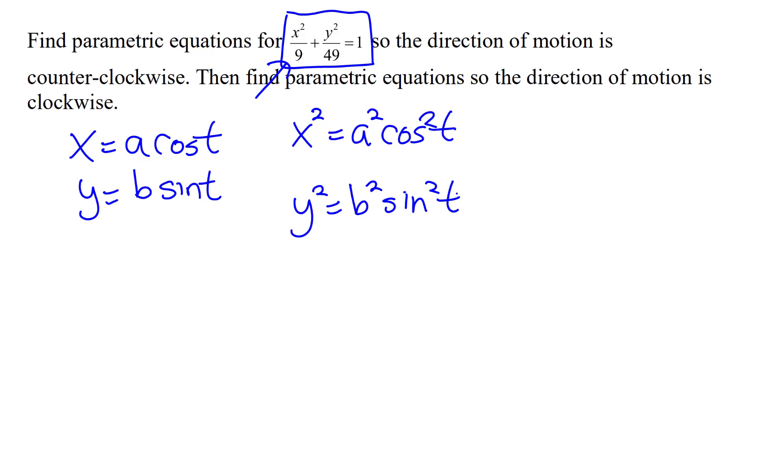It still doesn't look like that form, so I'm going to divide by a squared and divide by b squared. So now I have x squared over a squared, y squared over b squared. And looking at that, if I put that equal to one, I would have that ellipse.